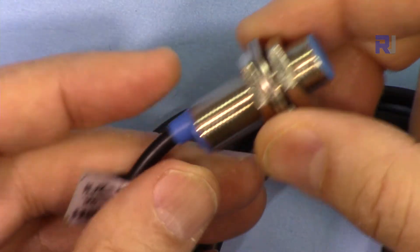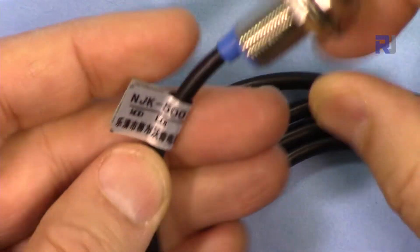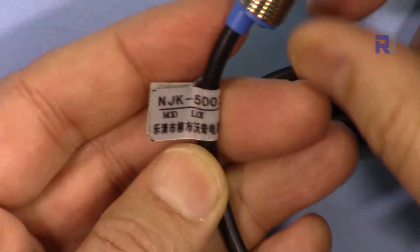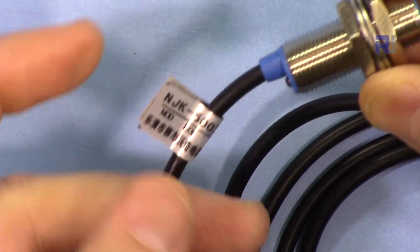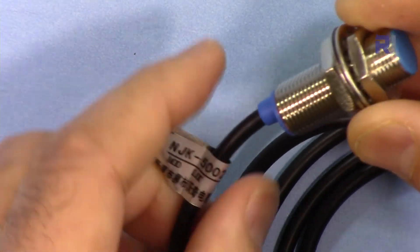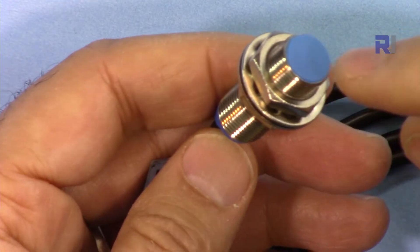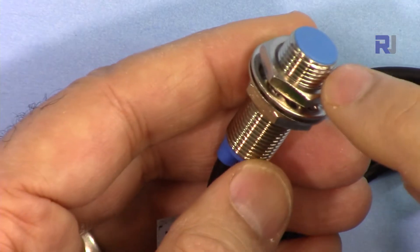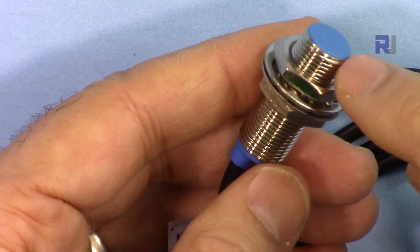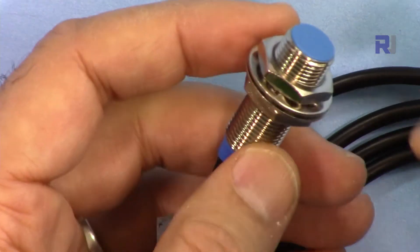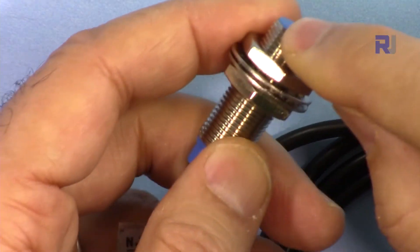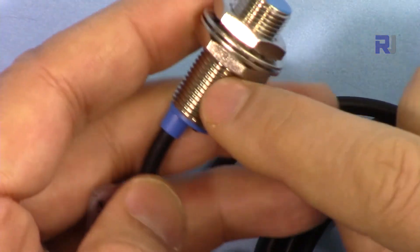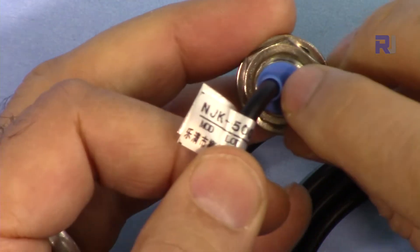This is the Hall sensor, model number NJK5002C. Finally we are getting something from eBay and AliExpress that has a model number. Internally this has a Hall sensor. The job of the Hall sensor is to detect magnetic field. When a magnet is close to this, it detects it and will send a low signal. This also has a light here when it detects.